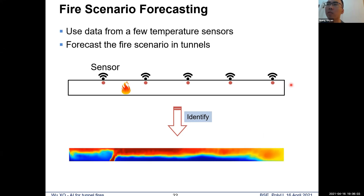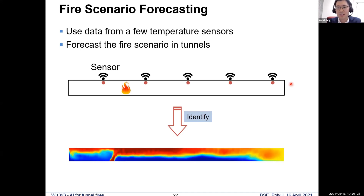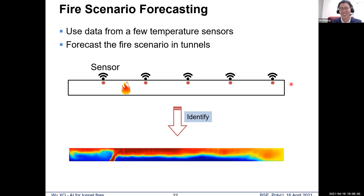The second question is: will the spalling of the concrete affect the sensor inside the tunnel? We didn't consider this influence. We only considered the development of fire — the influence of fire on the distribution of temperature and smoke — and didn't consider damage to the tunnel structure. The spalling can be induced by fire, and I guess all these sensors will fail before spalling occurs. Yes, it can be induced by the hot gases.